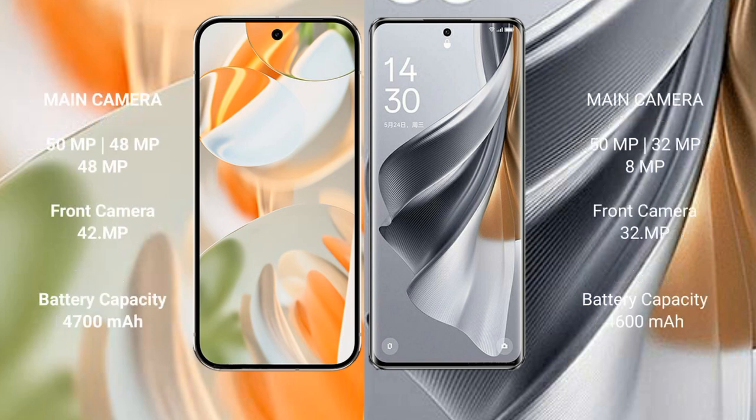The Google Pixel 9 Pro features a rear triple camera setup: 50MP plus 48MP plus 48MP, with a 42MP front camera. The Oppo Reno 10 Pro also has a rear triple camera setup: 51MP plus 32MP plus 8MP, with a 32MP front camera.